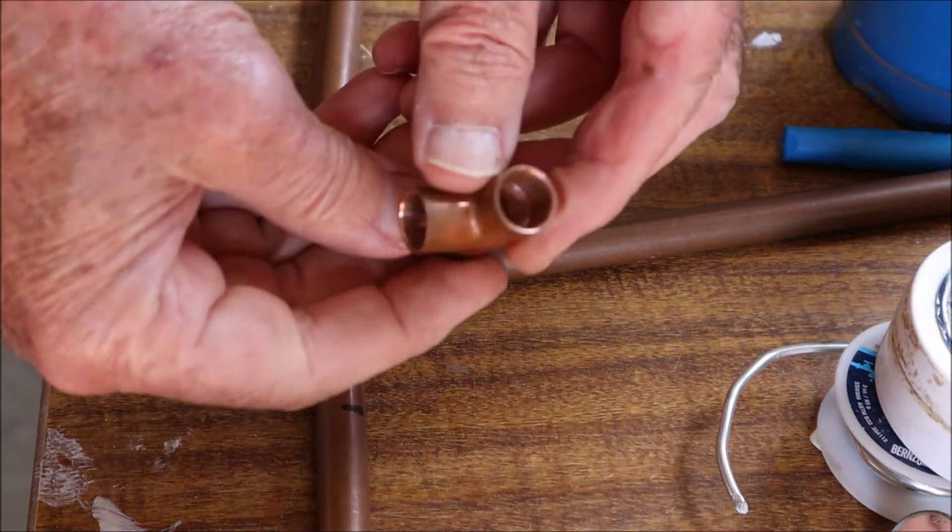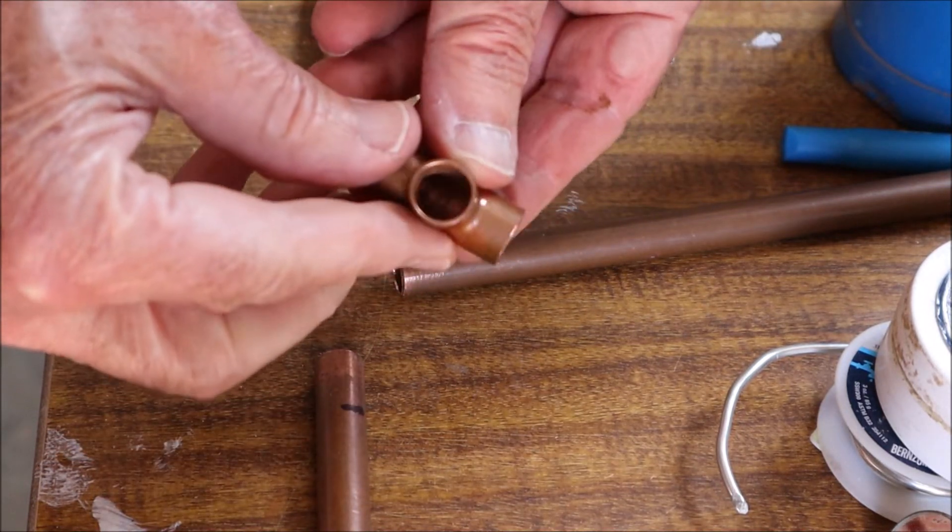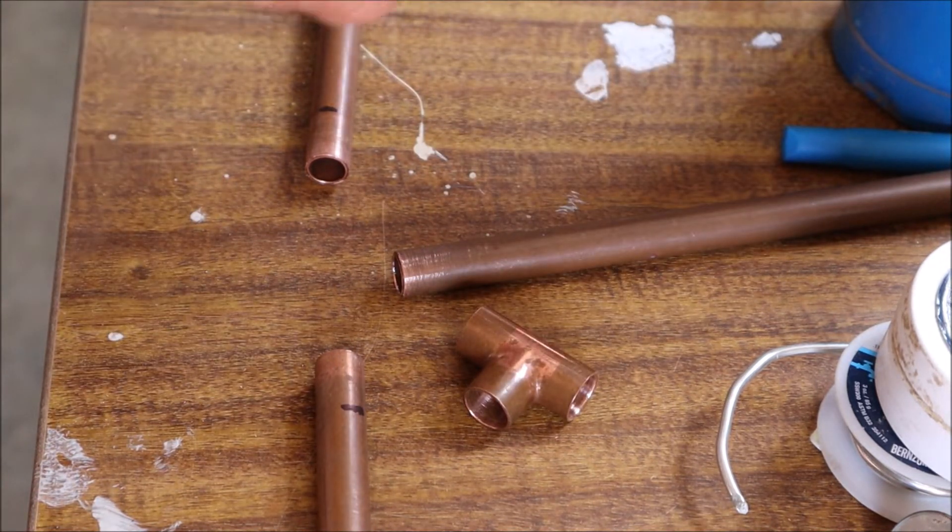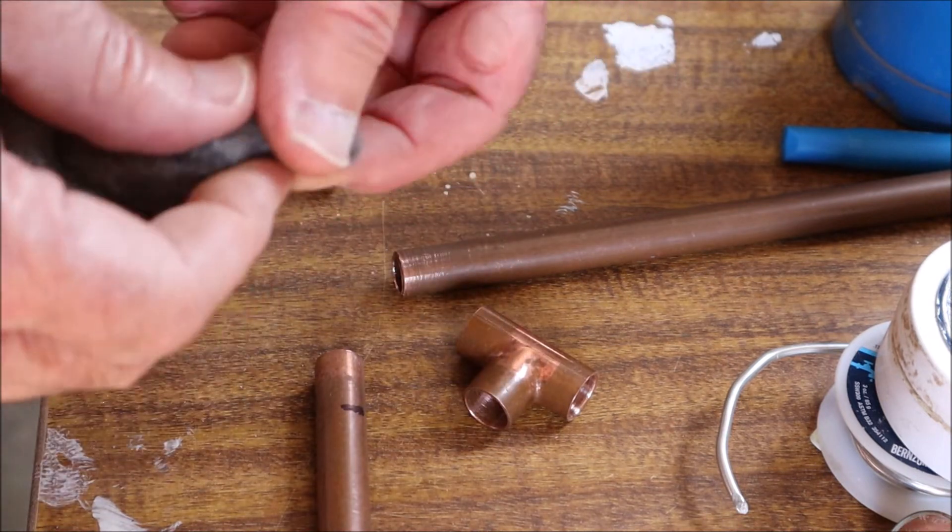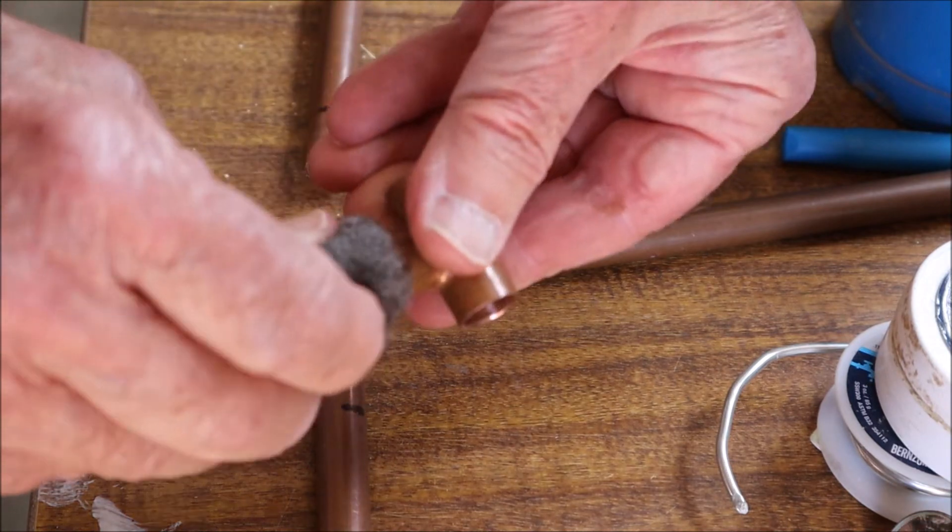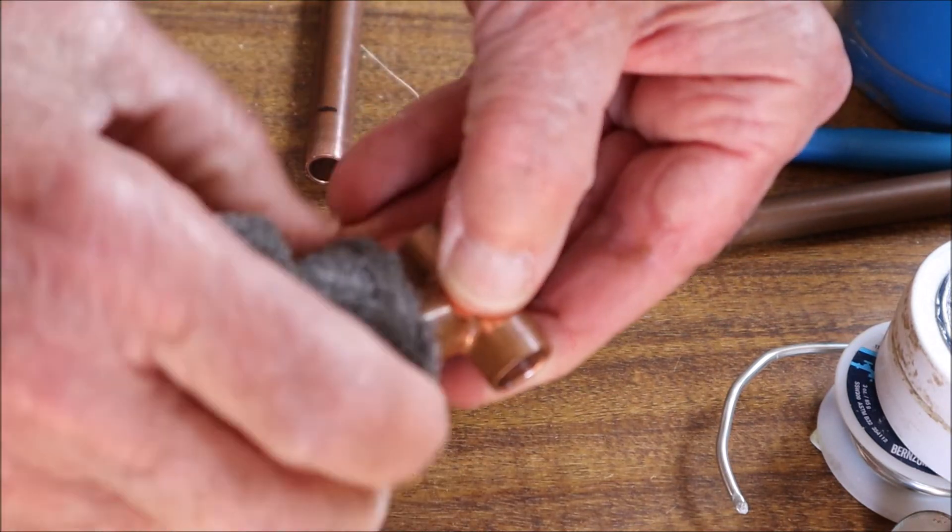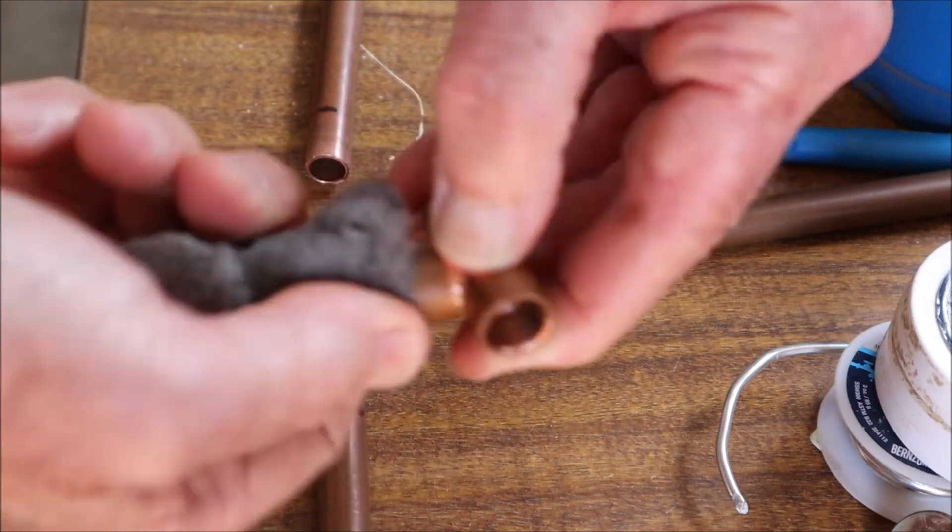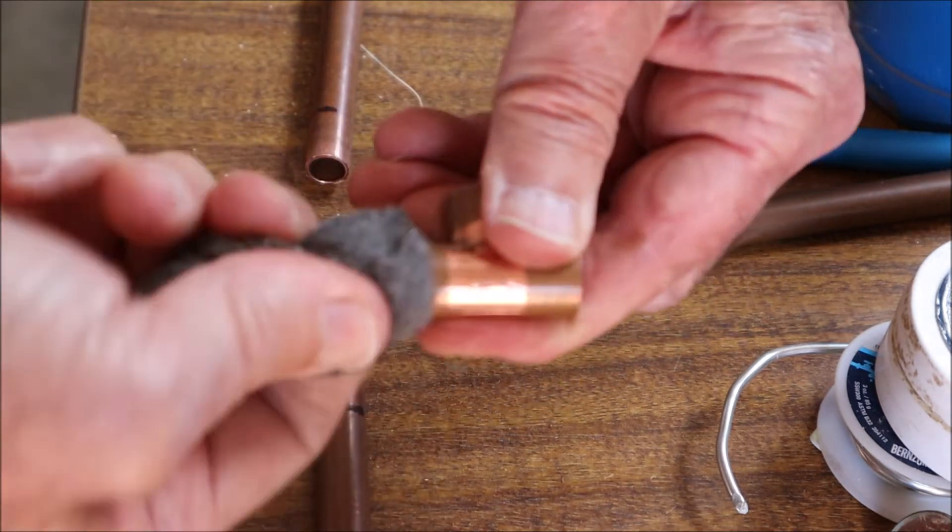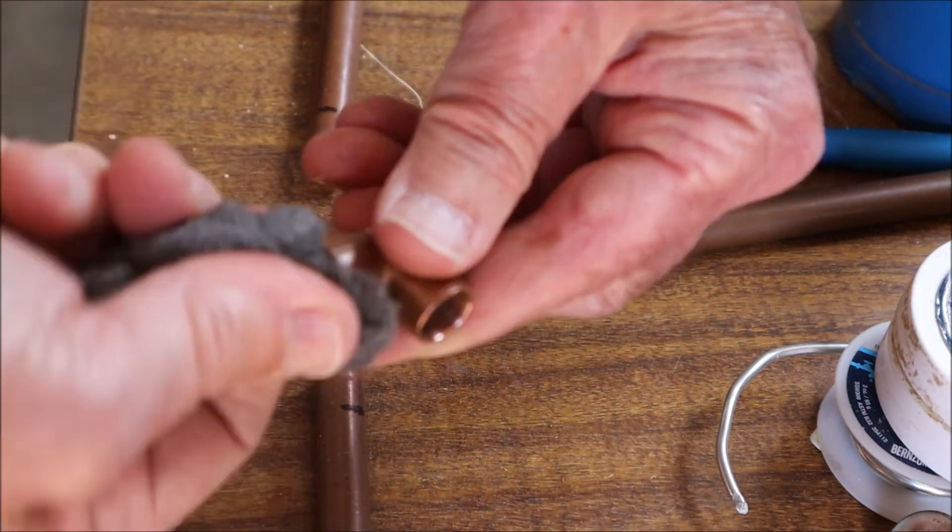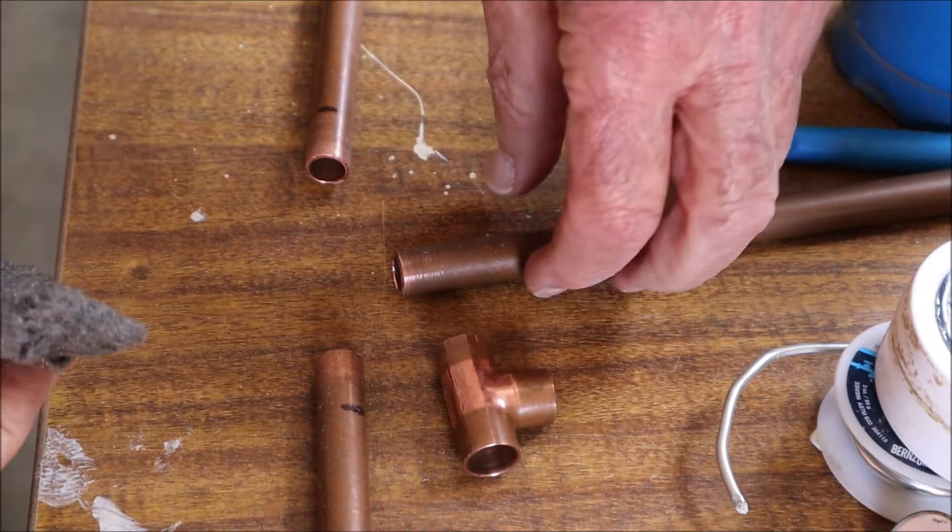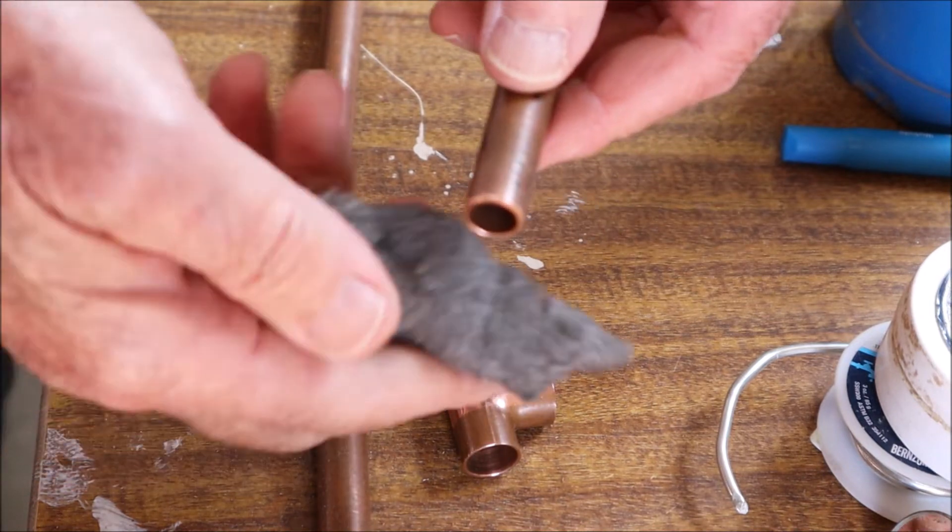I very often use a bit of steel wool—one of my favorite things. You can even use a bit of that inside there, but just be careful you don't leave any in there because you don't want a mixture of metals in your solder because that can cause a bit of a disaster. If you're going to use something like this, just make sure you've got rid of all of it before you do your soldering. I like a nice polished surface because I believe it helps the solder to flow into the joint better.